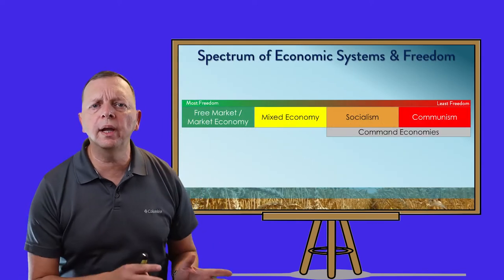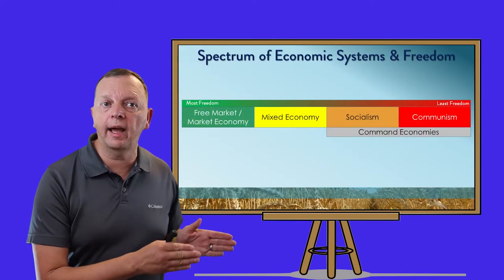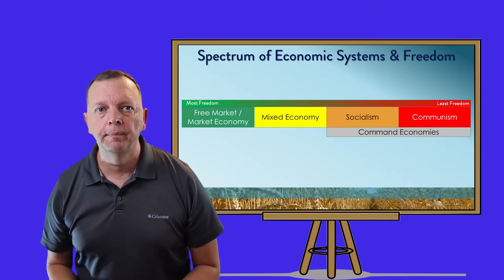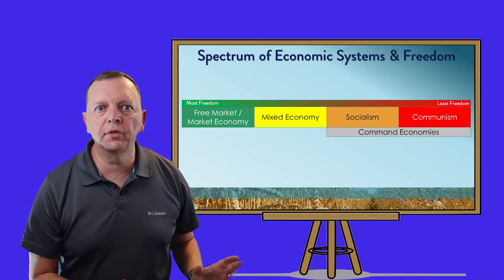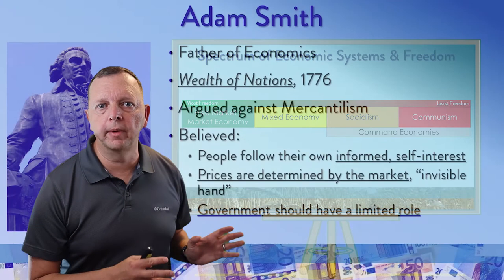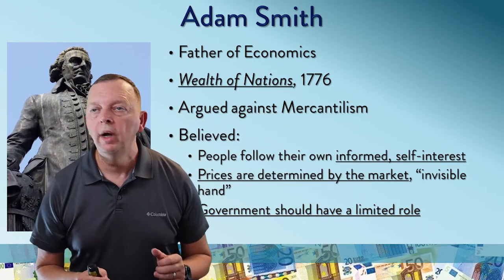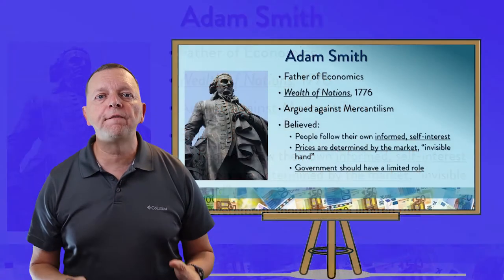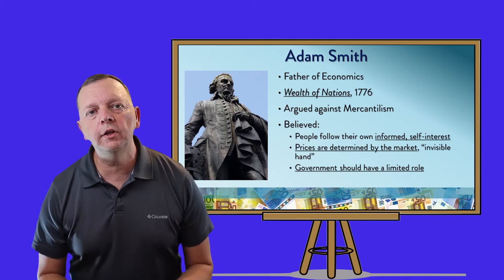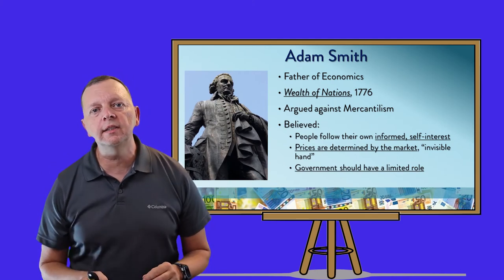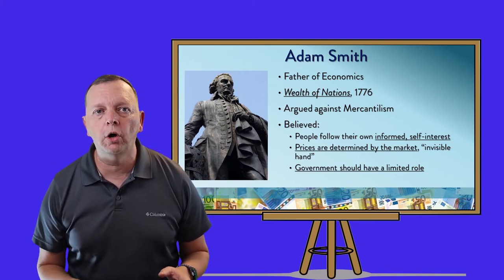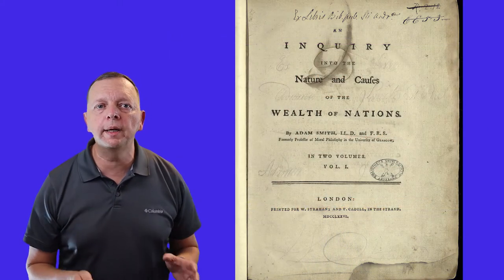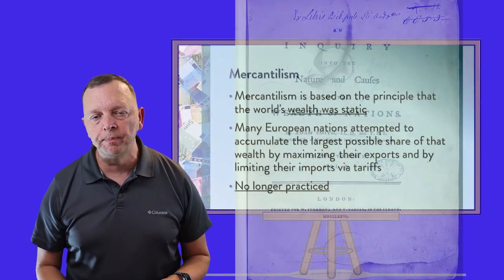Now, we can break these up between the economic systems that have the most amount of freedom and those that have the least amount of freedom. We're going to start with the one that has the most amount of freedom. Let me introduce you to Adam Smith. He is known as the father of economics, and the reason is because in 1776, he wrote a book called The Wealth of Nations. It was largely an argument against something known as mercantilism.